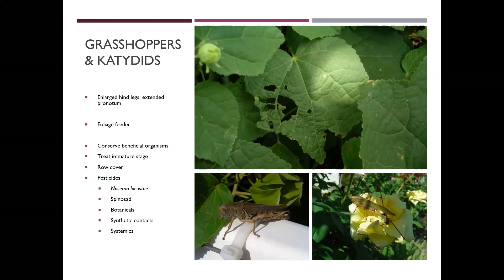As far as managing these, you can try to use row cover — that's going to work on the immature stages. But if the adults are really hungry, they can chew through row cover, so that can be problematic if you're trying to treat the adult stages. As far as chemical controls, there is a bait you can utilize — it will kill the immature stages of grasshoppers and katydids, but it is not going to kill the adults.